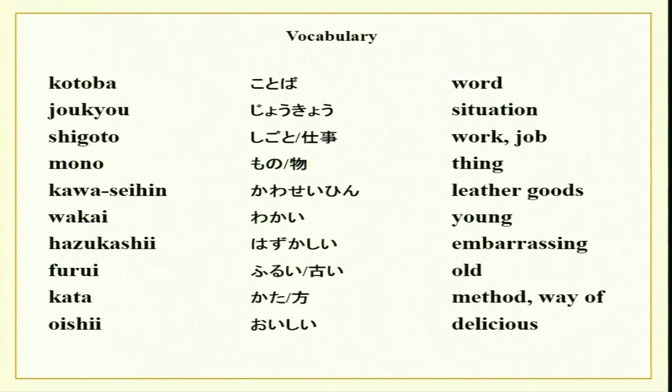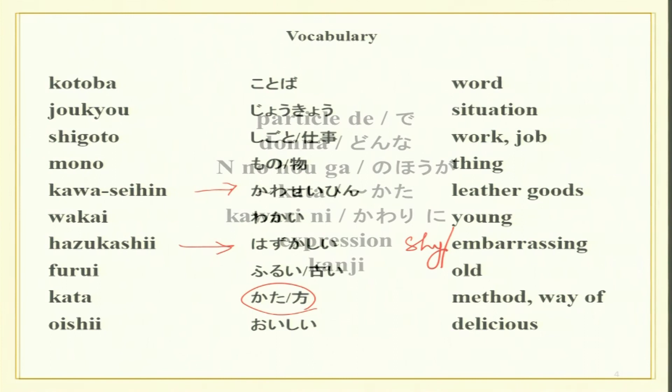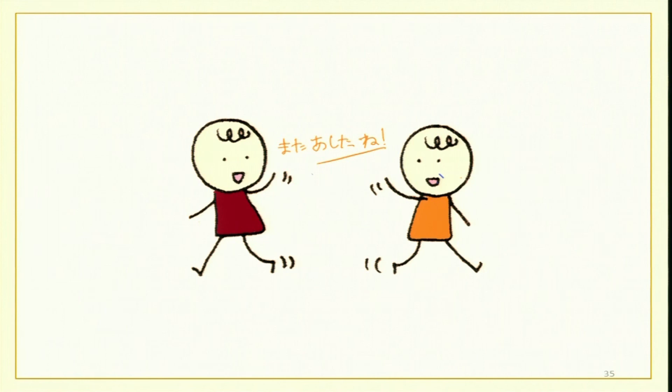We also have vocabulary — go over it. Some new words: kawaseihin means leather goods, hazukashii is embarrassing or shy, furui is old, kata means method. Make sentences with these and improve your conversation. With this I would like to end today's class. There are many things and different conjugations — we have revised some and learned some. You have also done shitsureshimasu and its different uses. Try to go over the lesson once again, listen to the whole kaiba so your hearing improves. Minasan, mata aimashou, arigatou gozaimasu. Thank you.